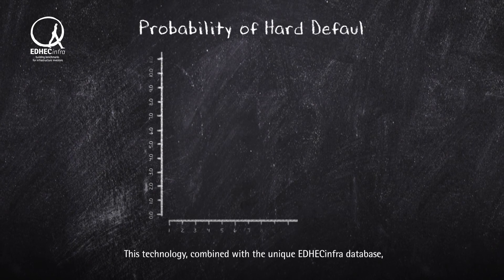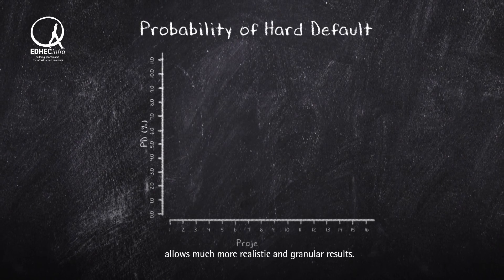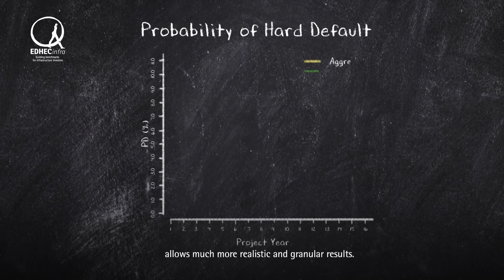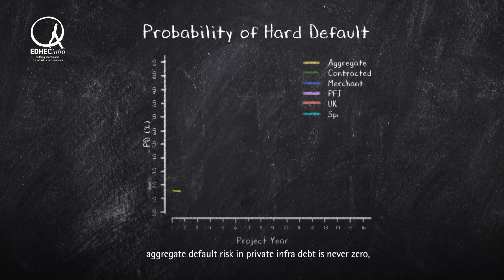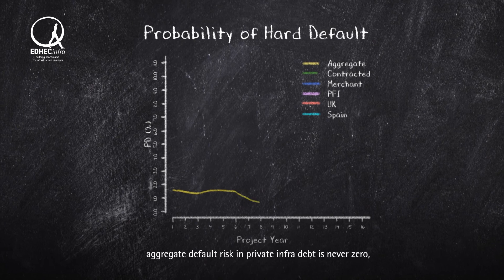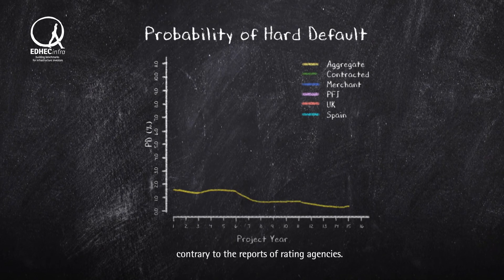This technology, combined with a unique EtikInfo database, allows much more realistic and granular results. Even when few or no defaults have been reported, aggregate default risk in private infradebt is never zero, contrary to the reports of rating agencies.